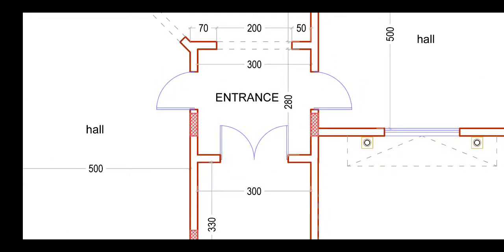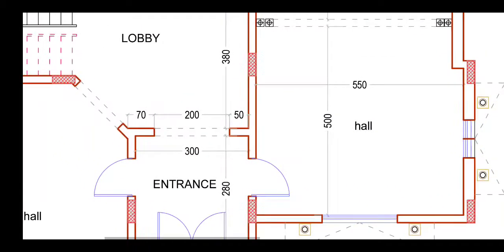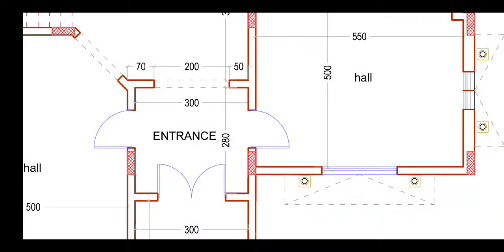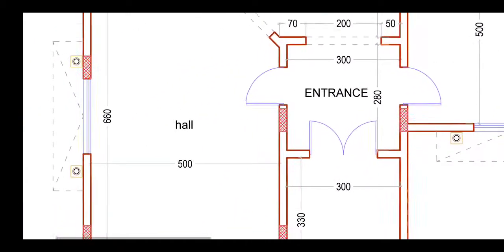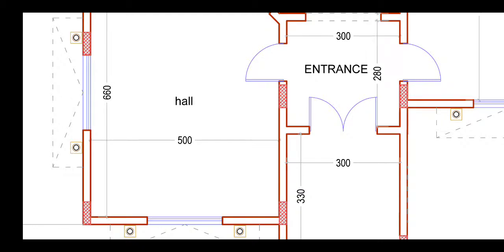Wherever our door location and window location, sizes are already arranged here with the column layout. From outside we have given a wonderful projection design. This is our entrance, 280 by 300 centimeters, and here we are getting our hall, 500 centimeters by 660 centimeters. Units are given in centimeters.